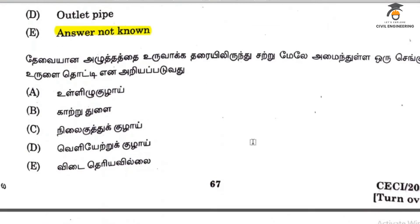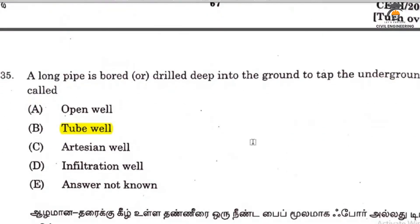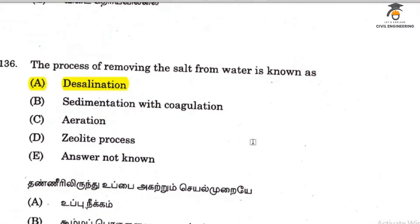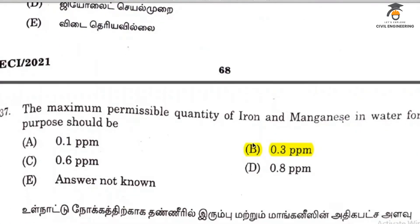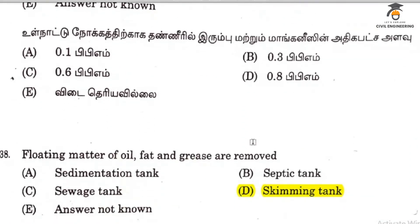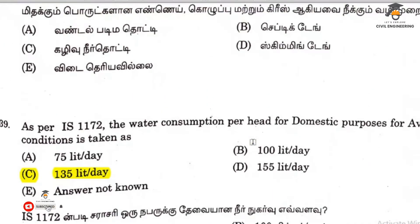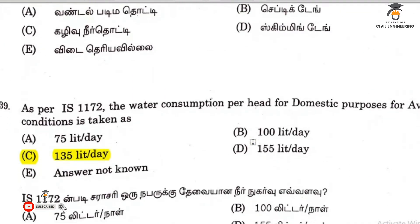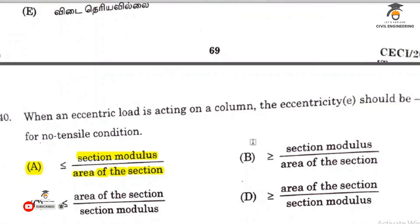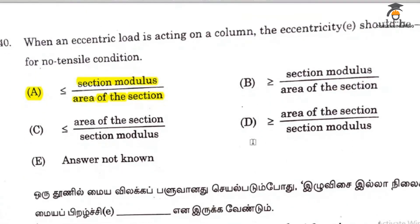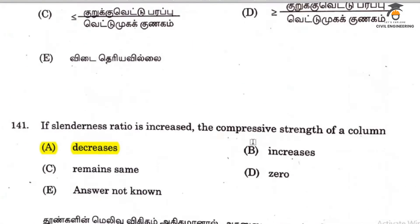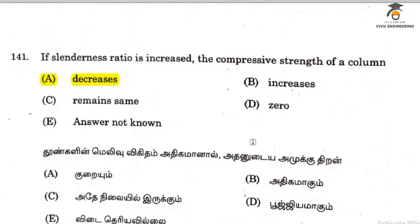Question 135 is tube valve. Question 136 is desalination. Question 137 is 0.3 parts per million. Floating matter is removed in a skimming tank. Question 139 is 135 liters per day. Question 140 is shear force divided by area of section, which is less than or equal to a given value.